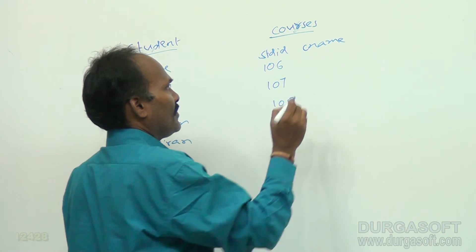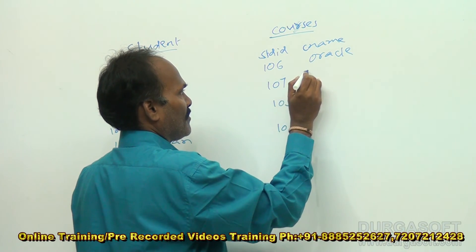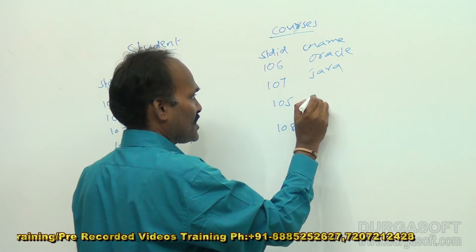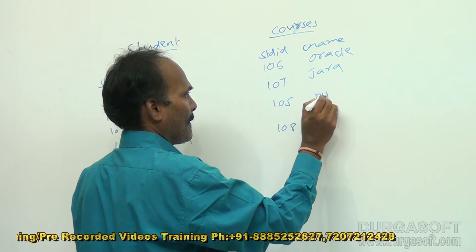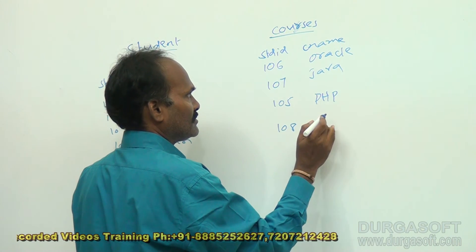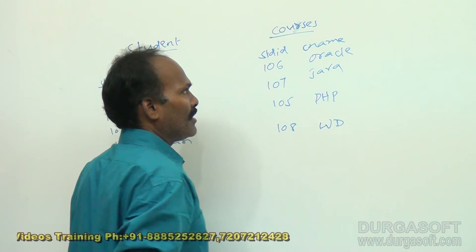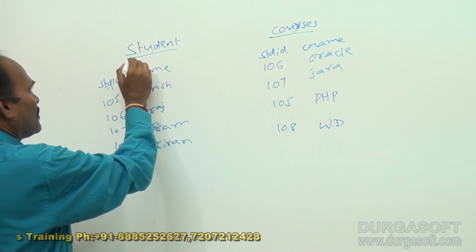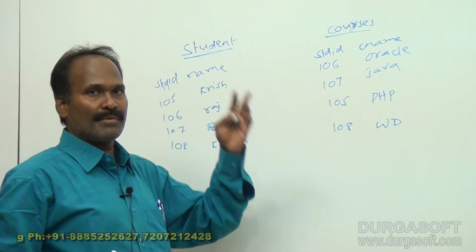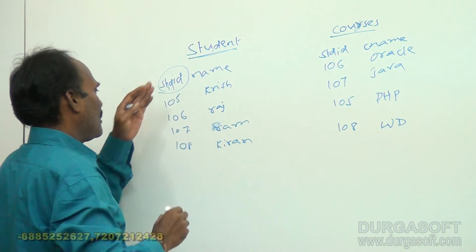The course names are: Oracle for 106, Java for 107, PHP for 105, and web designing for 108. The student table contains all student information and the courses table contains all course information. In these two tables we have a common field called student ID.